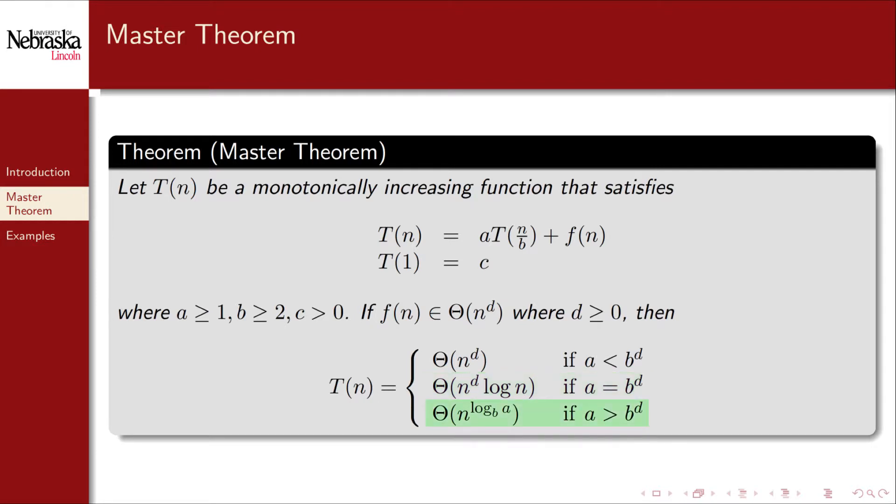Finally, if a is greater than b to the d, then we're doing more recursion than non-recursive work. In each of these three cases, we can bound T sub n by some polynomial or polylog function accordingly.